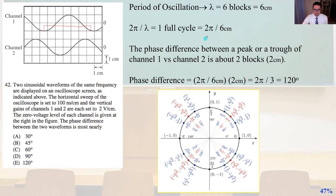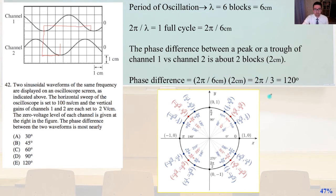The phase difference between a peak or trough of channel 1 versus channel 2 is about 2 blocks. We can see this by locating the trough of the lower channel and the trough of the higher channel — that is about 1 block, 2 blocks, or 2 centimeters. So the phase difference is (2π / 6 cm) × 2 cm = 2π/3, which equals 120 degrees. That is answer E.